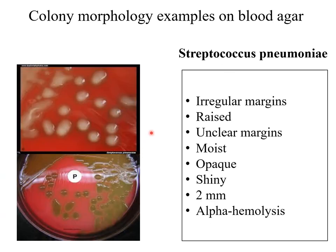Streptococcus pneumoniae: the colonies have irregular margins, are raised with unclear margins, moist, opaque, and shiny. They are usually 1 to 2 mm in diameter, and are characterized by being partially hemolytic on blood agar — the pattern is alpha hemolysis — which can be seen by the greenish discoloration of the blood agar.